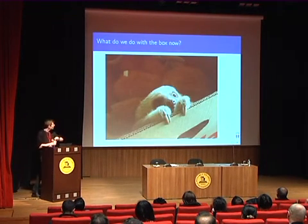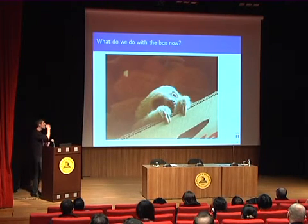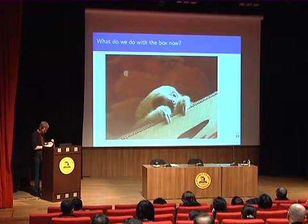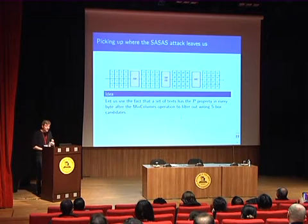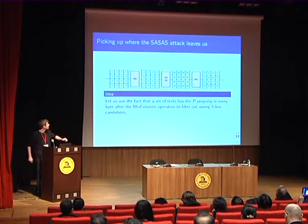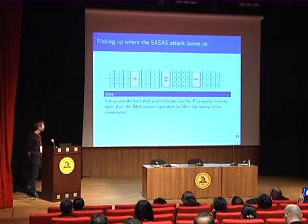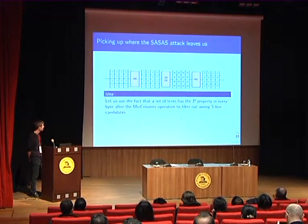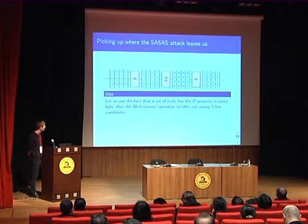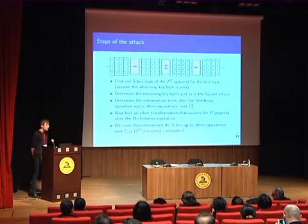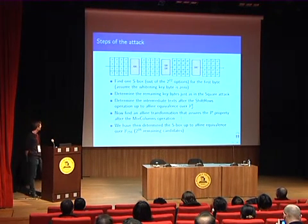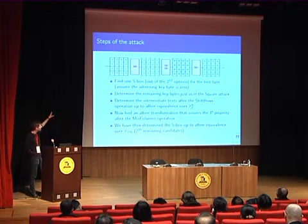So what do we do with the SBOX now? There is a property we haven't used yet: the P property. We know that after the MixColumns operation, such a lambda set must have the P property in every byte position. The idea is to filter out wrong SBOX candidates by checking for the P property after MixColumns. The first step is to use the technique from the SASAS attack to find one of the 2^72 SBOX candidates in the first byte.